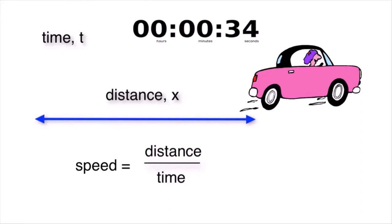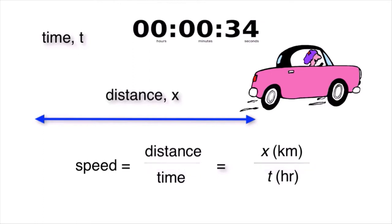The units of speed are distance, say kilometers, over time, say hours — kilometers per hour.